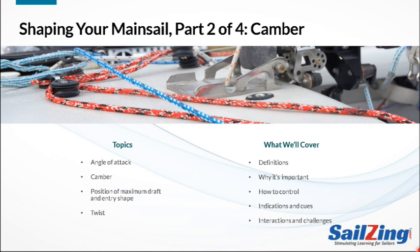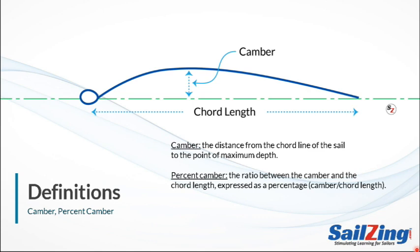Today's topic is camber. Camber measures the fullness or depth of the sail. Specifically, camber refers to the distance from the chord line of the sail to the point of maximum depth. Percent camber is the ratio between the camber and the chord length, expressed as a percentage.